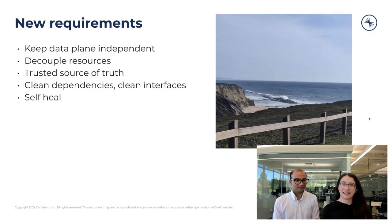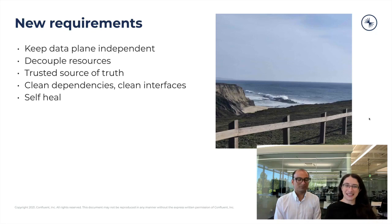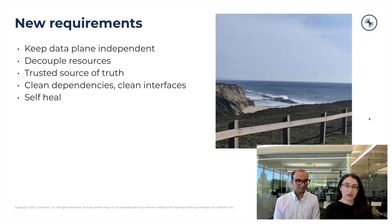Every new architecture starts with requirements. We wanted to keep the good stuff — data plane stays independent and users don't notice control plane activity. But we need to decouple resources, giving each team its own thing to allow independent movement. While decoupling, we still need a trusted source of truth — at minimum, to bill customers on the current state of all their systems in the last hour. We need clean dependencies and clean interfaces for services to talk to each other, and we wanted the system to be self-healing, so if a service goes down it gets auto-restarted and sync continues seamlessly.